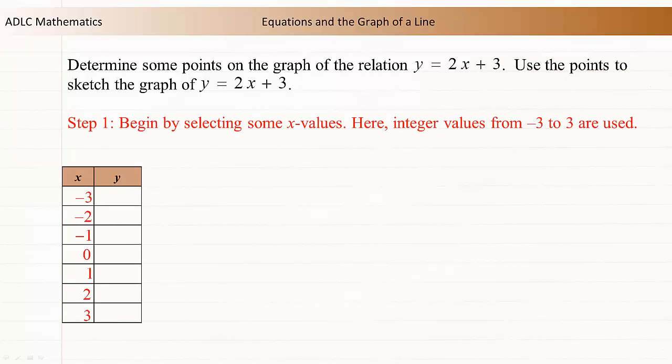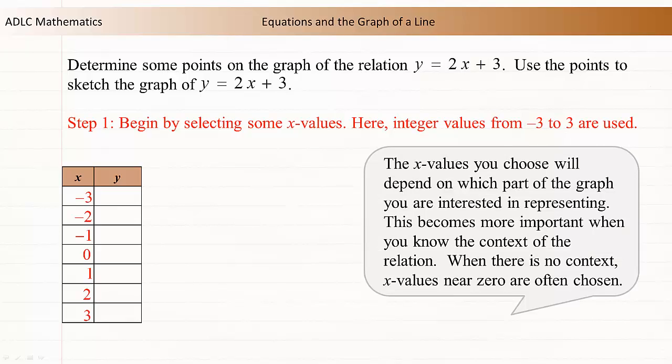We begin by selecting some x values. Here, integer values from negative 3 to 3 are used. The x values you choose will depend on which part of the graph you are interested in representing. This becomes more important when you know the context of the relation. When there is no context, x values near 0 are often chosen.